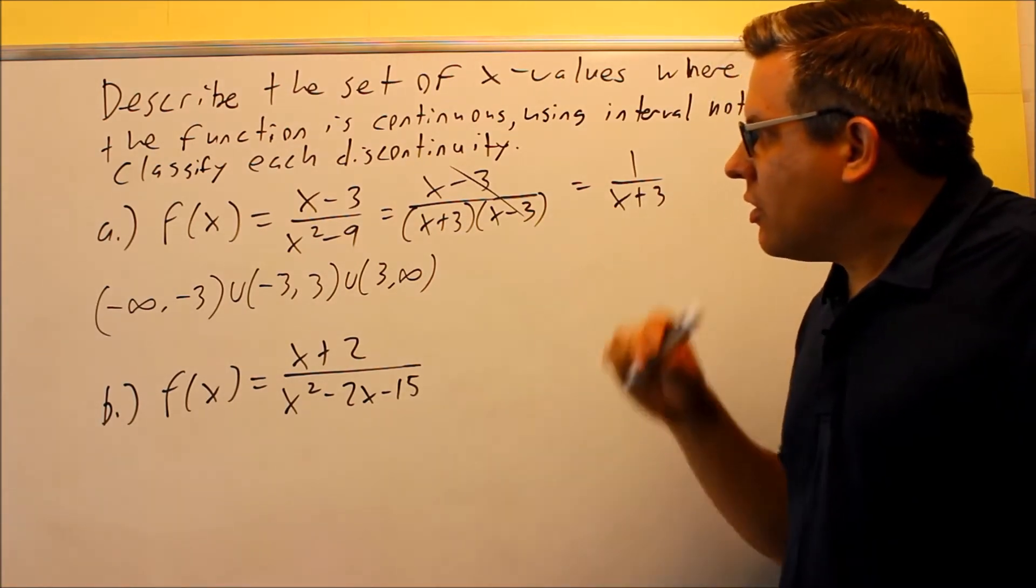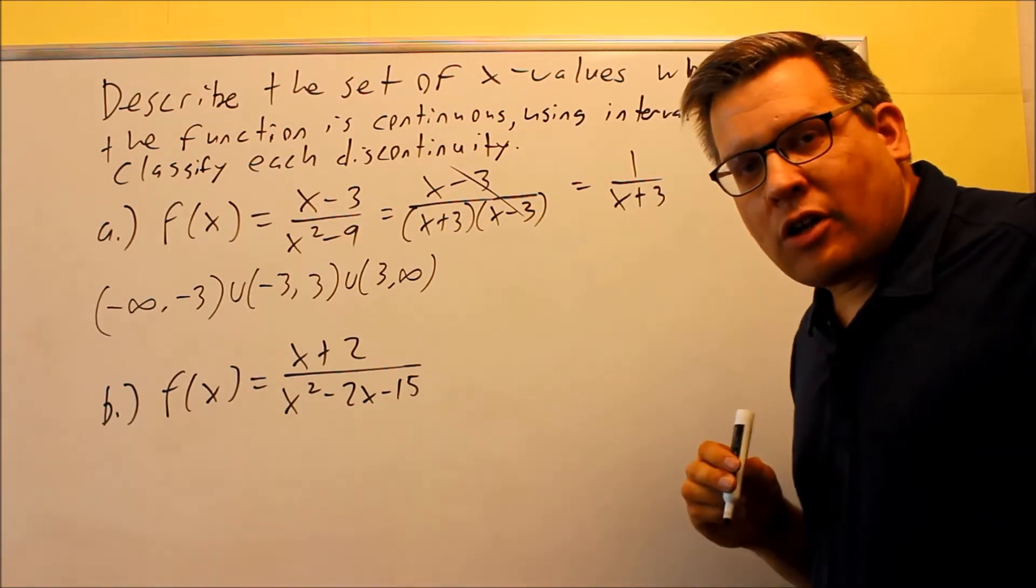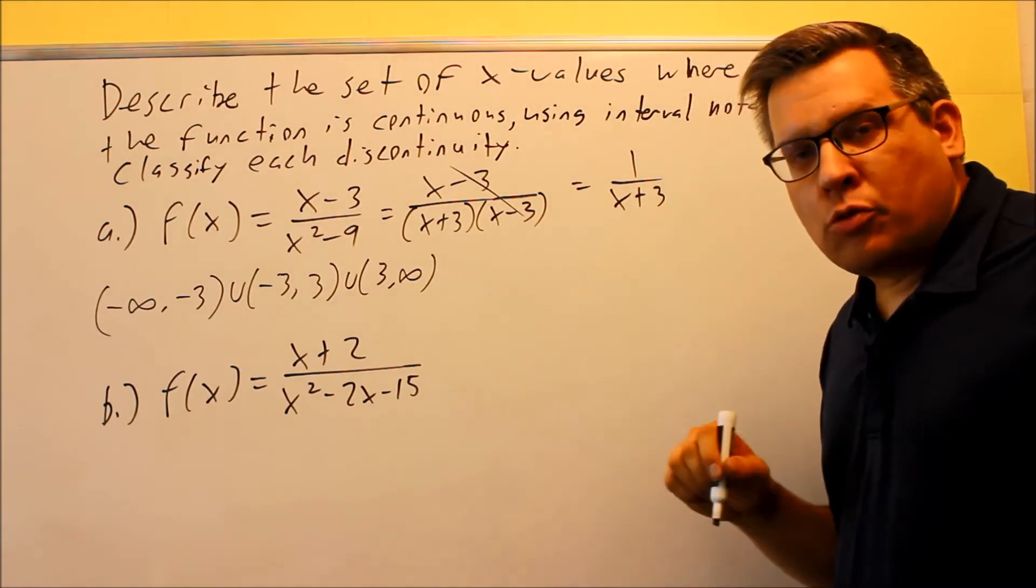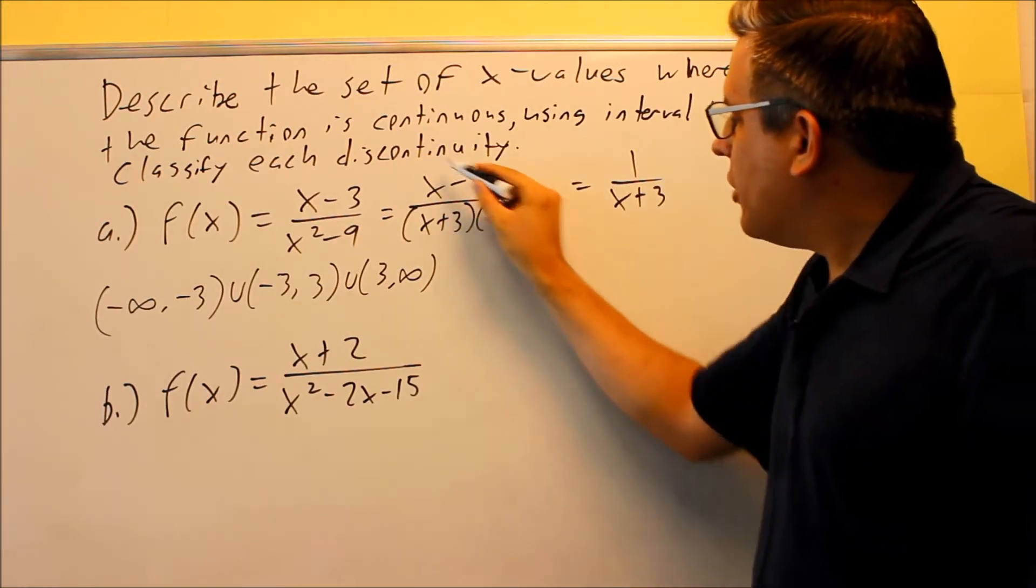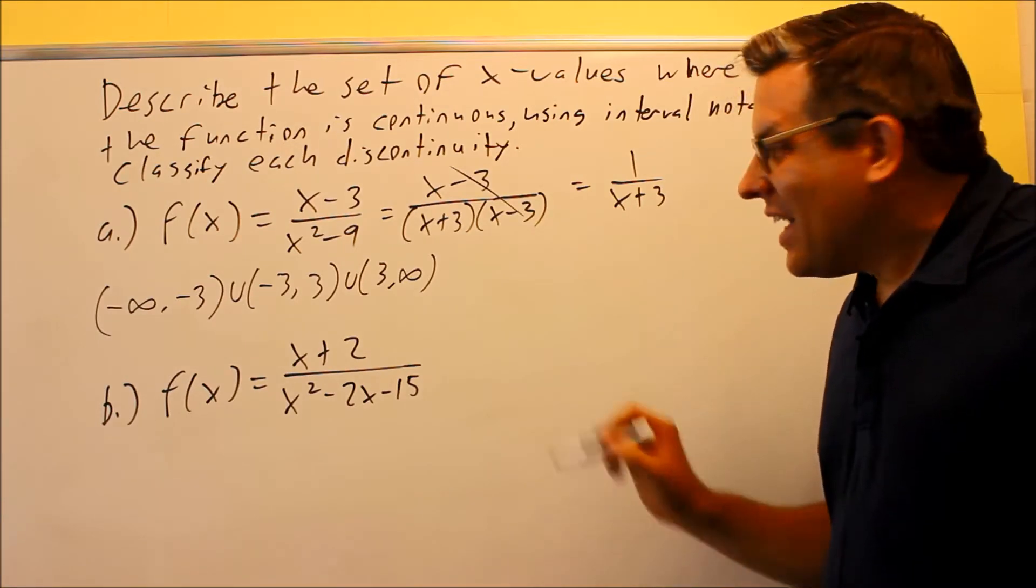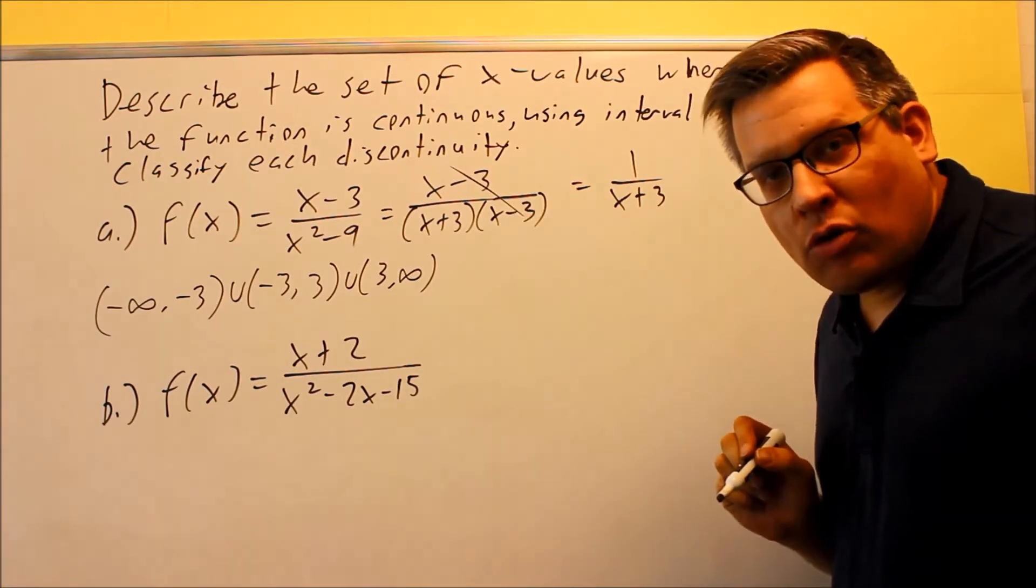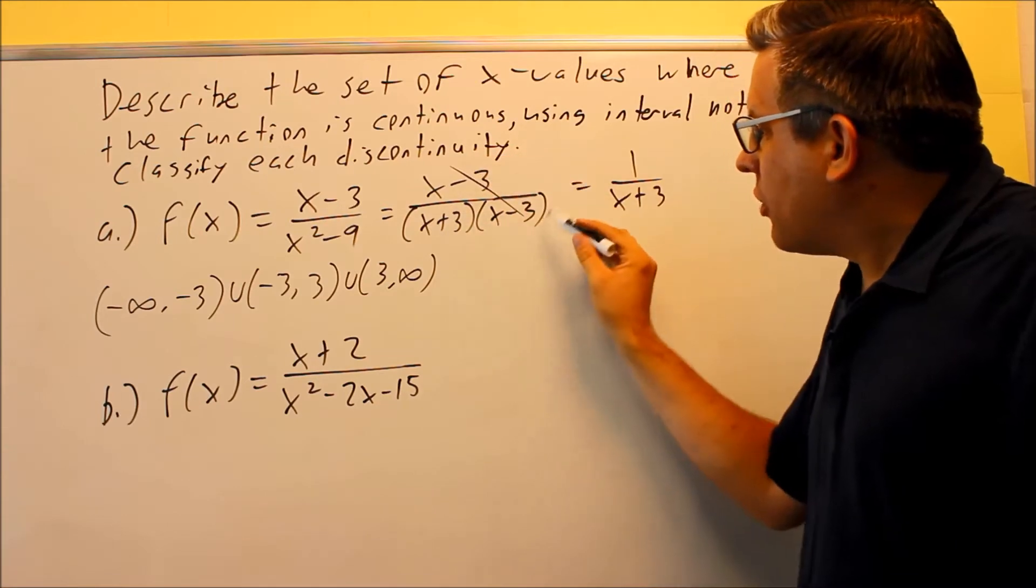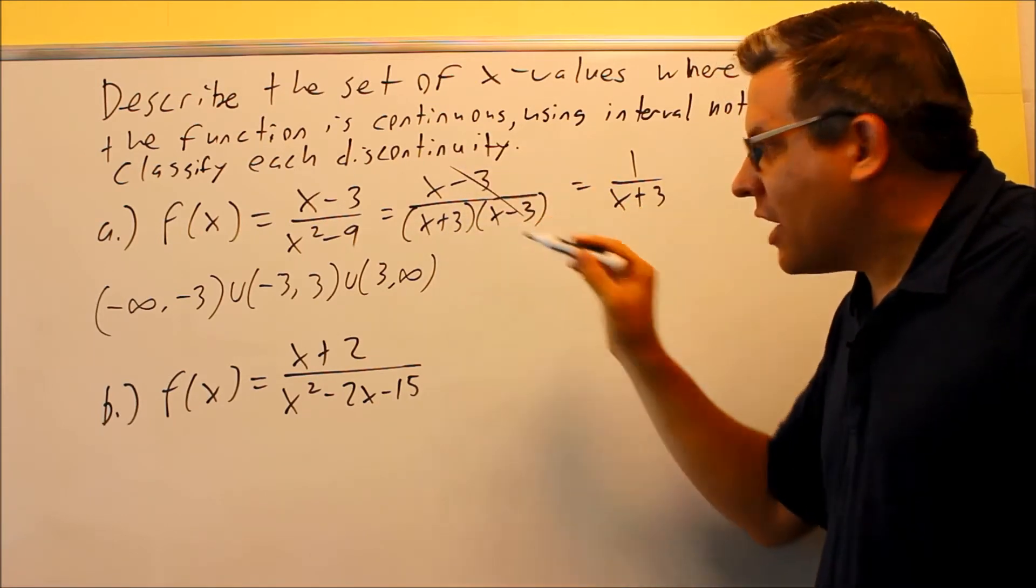Now, for the ones that are not continuous, we want to classify them as removable or non-removable. Anytime that you have a factor like this that cancels out from the top and bottom, at that x value you're going to have a hole. So when you cancel these out, the part that cancels out, you're going to set that equal to 0.